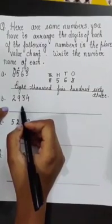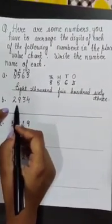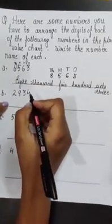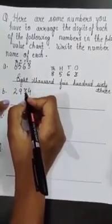Now let's see another example. The number is 2934. Starting from the right, we make the entries in the place value chart again.